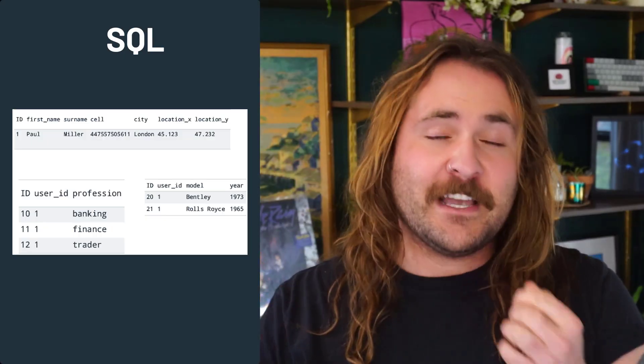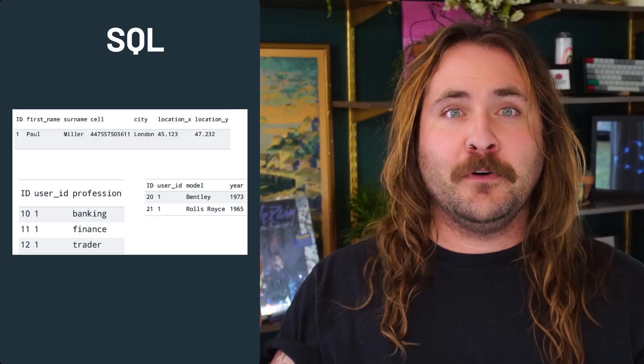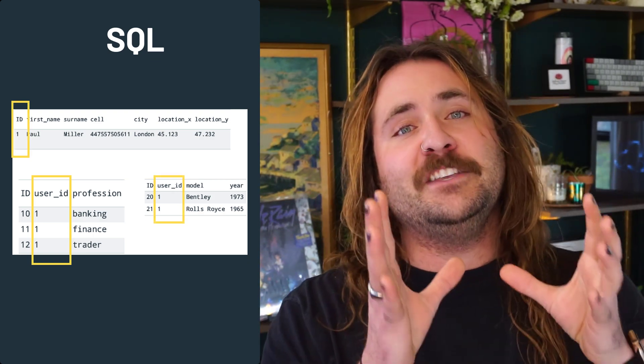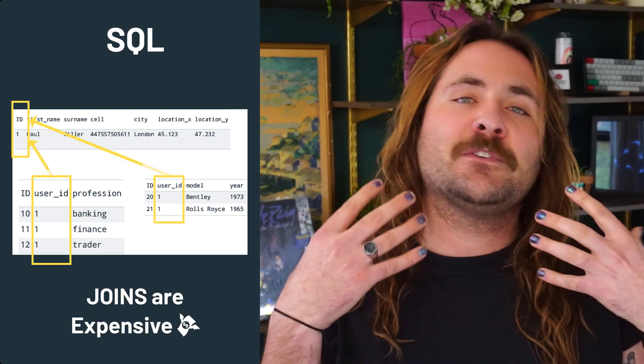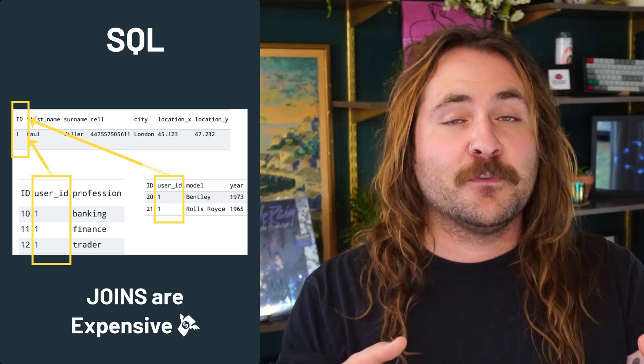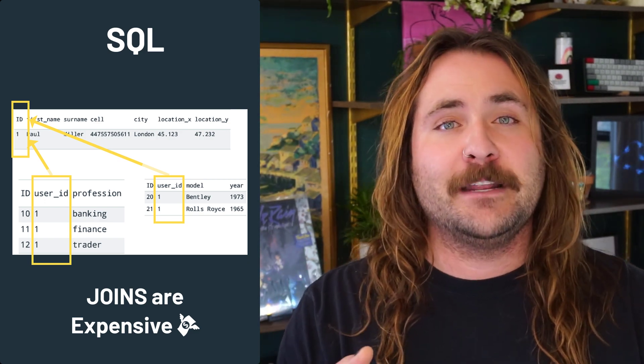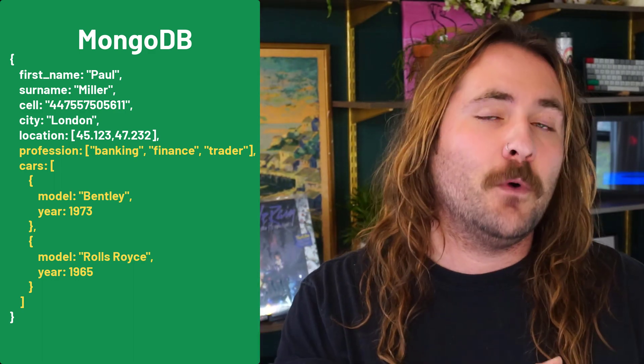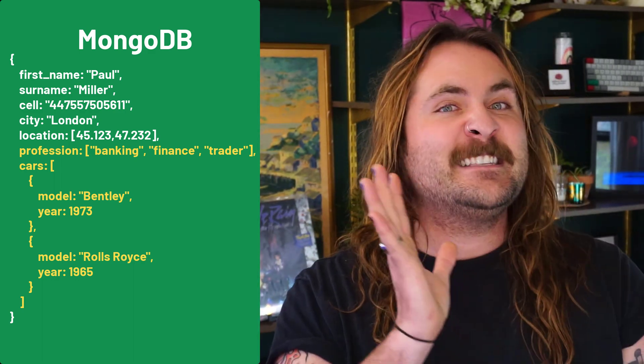In a SQL database, in order to pull together data from separate tables, you do something called a join. We saw this earlier — to pull together the professions and cars tables into a single query, you have to perform a join. Joins are expensive, time-consuming, and resource-intensive for the computers running those databases. MongoDB also has a join, but it's a bit more efficient. Instead of separating data out into separate collections, you can just embed it directly in the document.